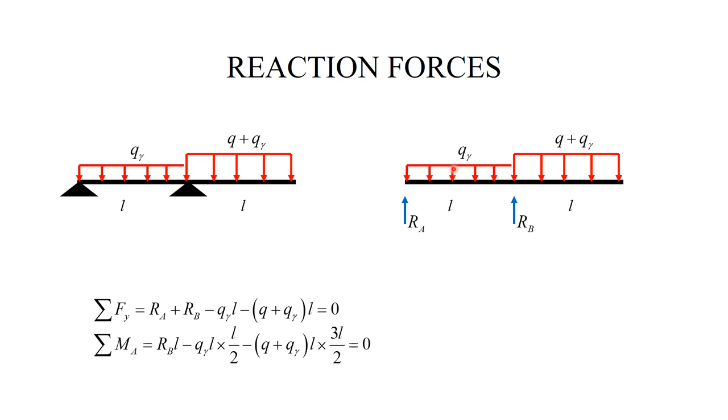The moment about A, the force RB counterclockwise. This load is clockwise, so it comes with minus, and the arm for this load is L over 2. The same goes for the second load, but in this case, the arm is 3L over 2. So, we have two equations, and we solve them for the reaction forces, RA and RB.